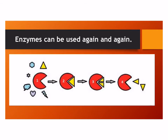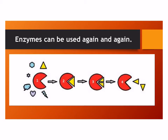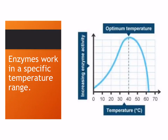The other thing you need to know about enzymes is that they can be used again and again. They help the reaction, but they don't get used up in the reaction. This enzyme works with just the yellow substrate — it fits right in the active site. But when the reaction is finished, the enzyme looks just like it did at the start. This enzyme hasn't changed in the process.